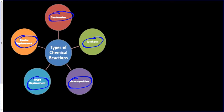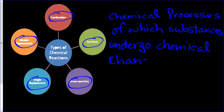So how do we formally define chemical reactions? Well, let's just say that chemical reactions are processes of which substances undergo chemical changes to become new substances.